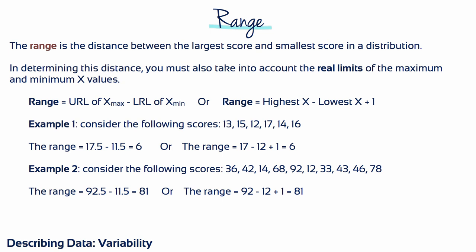The range is the easiest measure of variability to calculate. The range is the distance between the largest and smallest scores in a distribution. In determining this distance, you should also take into account the real limits of the maximum and minimum values. So the range is calculated as the difference between the upper real limit for x-max and the lower real limit for x-min. A less complicated way to do this calculation is to subtract your lowest score from your highest score, then add 1.